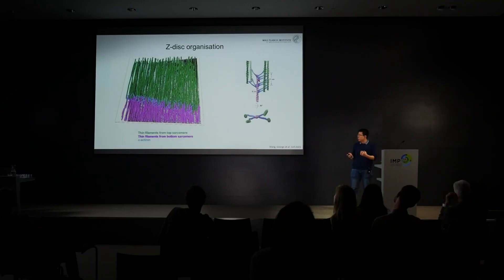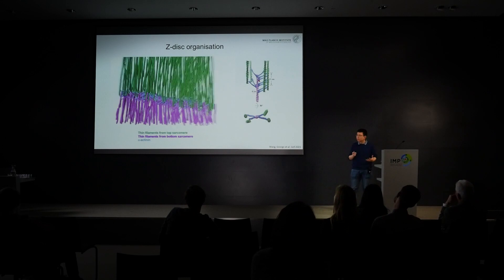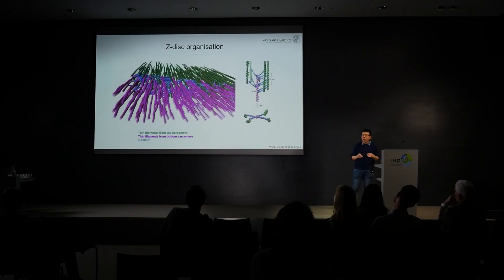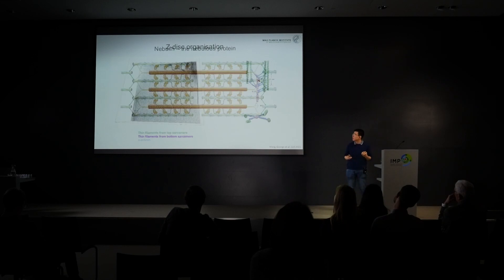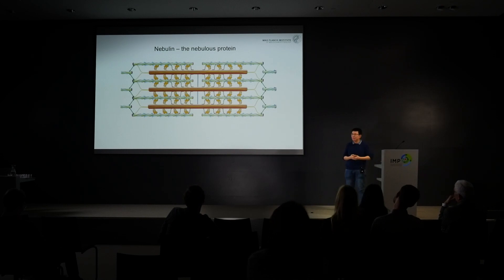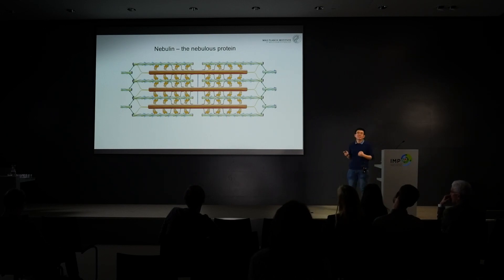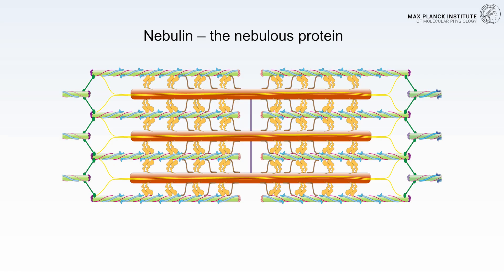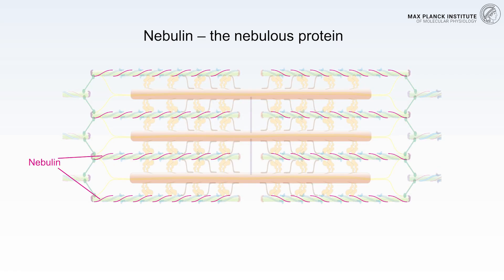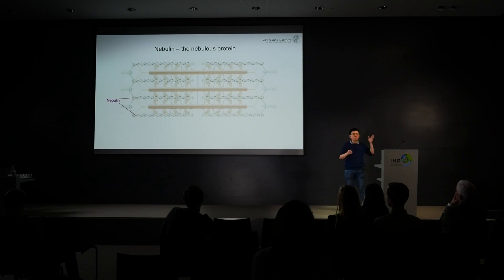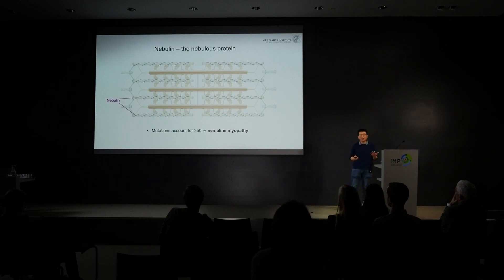Now we have a way to investigate the overall architecture of different sarcomere regions. We want to take a step further and investigate previously unknown proteins — or at least proteins with unknown structures. One such mysterious protein in the muscle field is nebulin. As its name suggests, it is a nebulous protein. Nebulin is very special in that one single molecule can bind the entire thin filament, from one side to the other — it is super elongated.